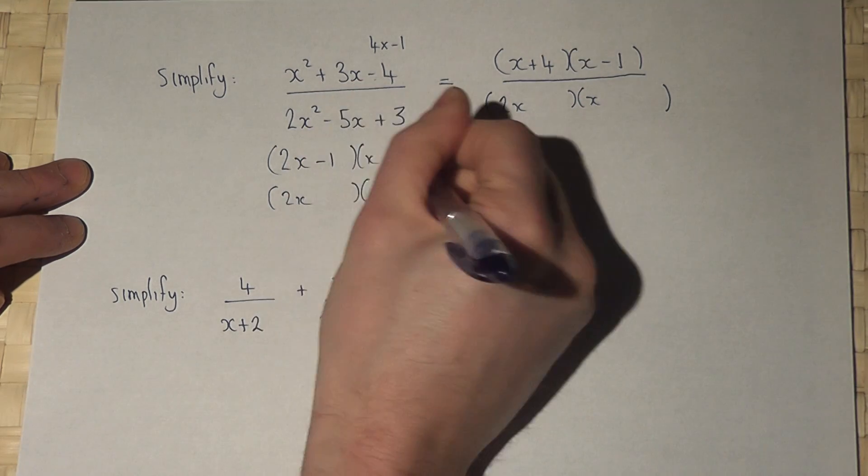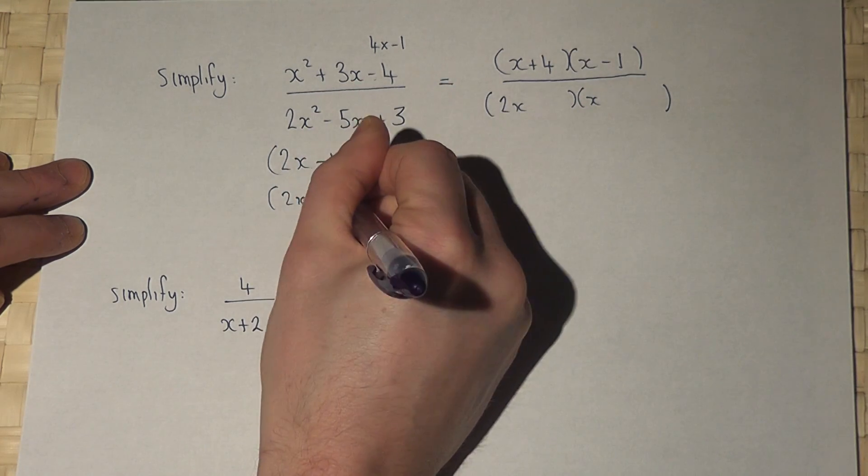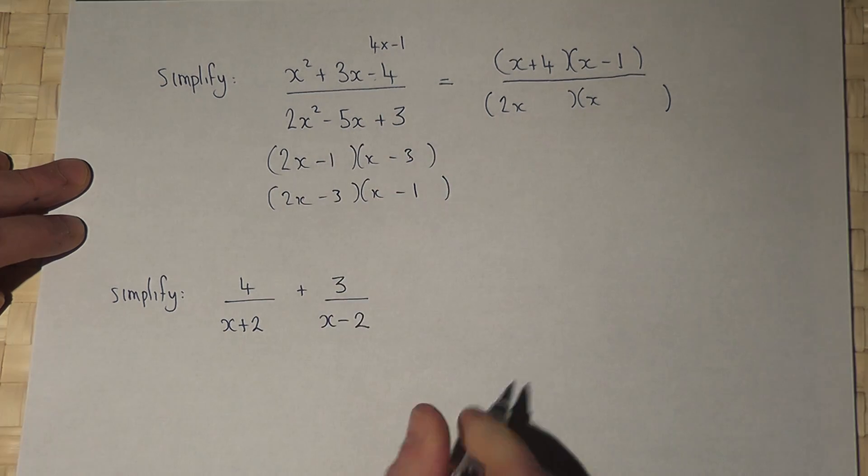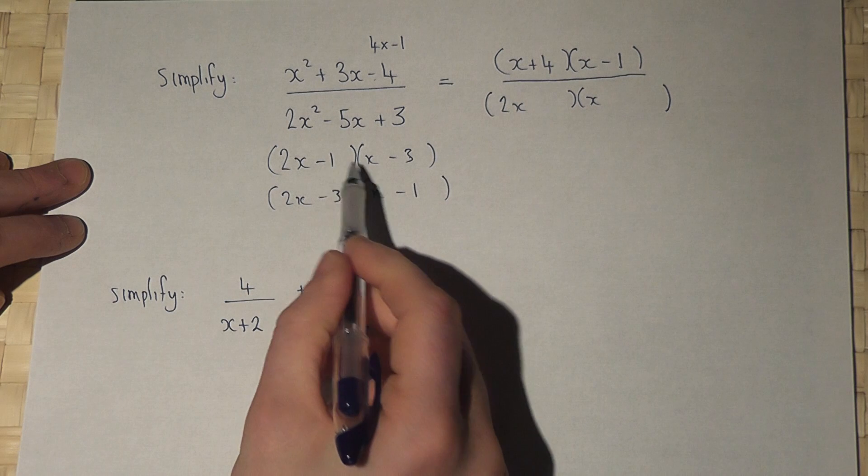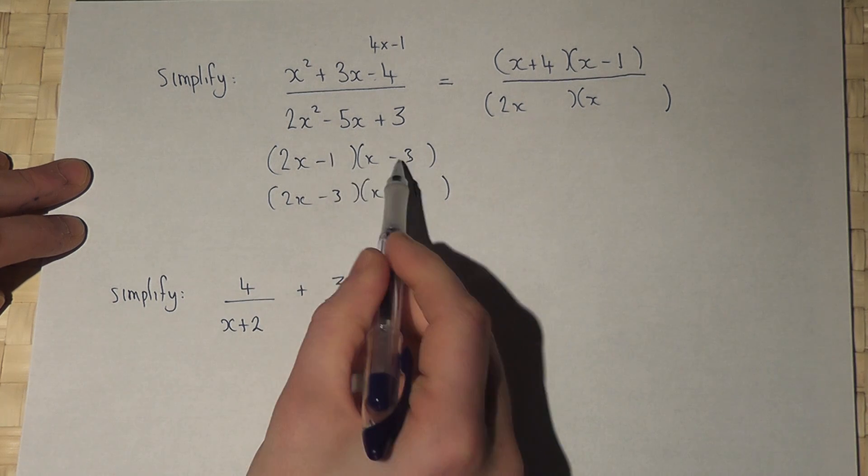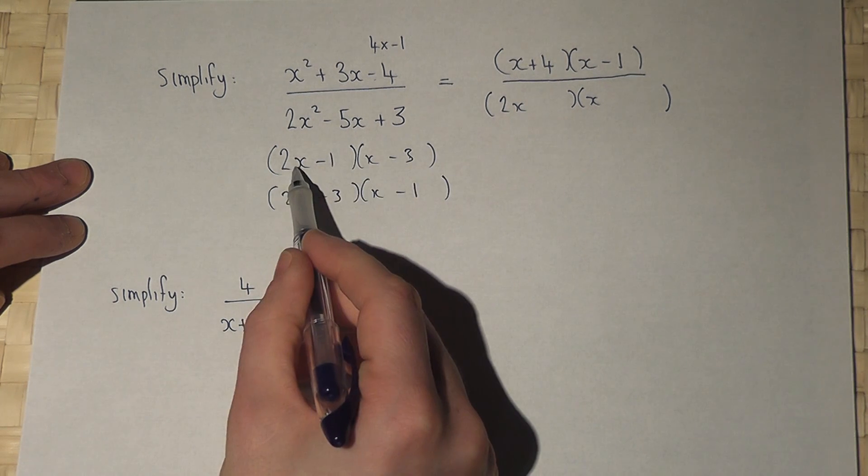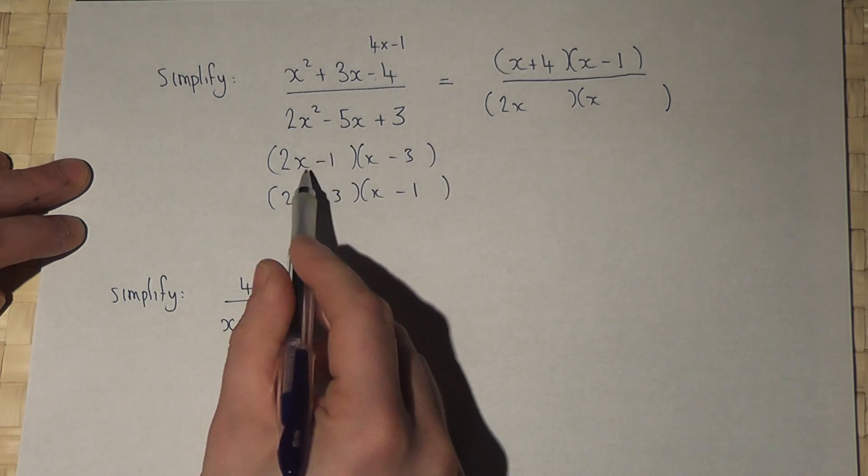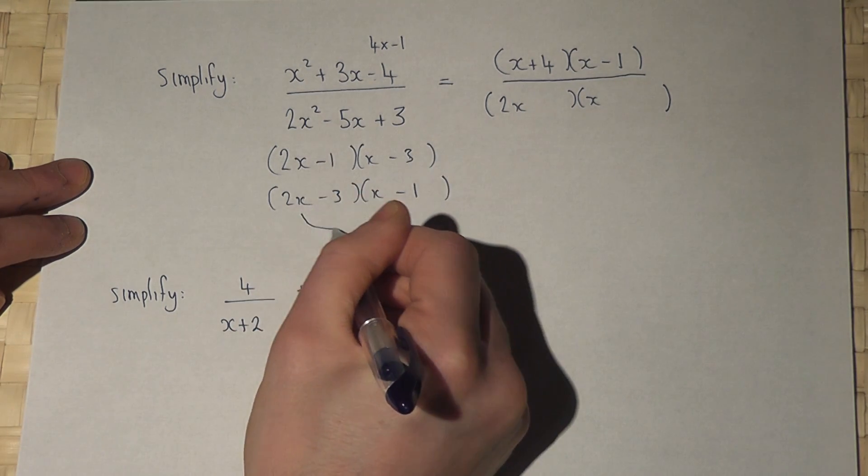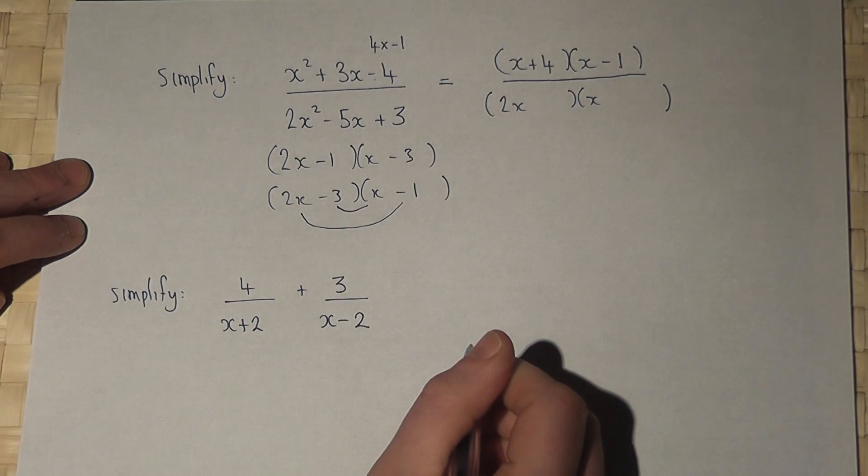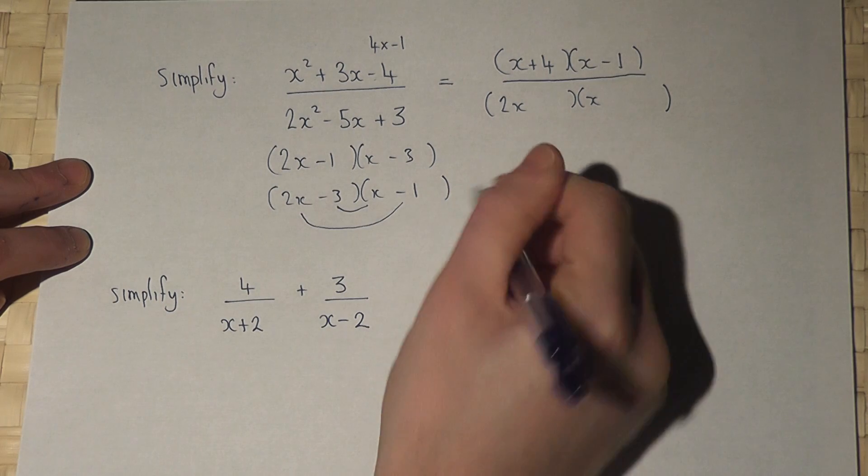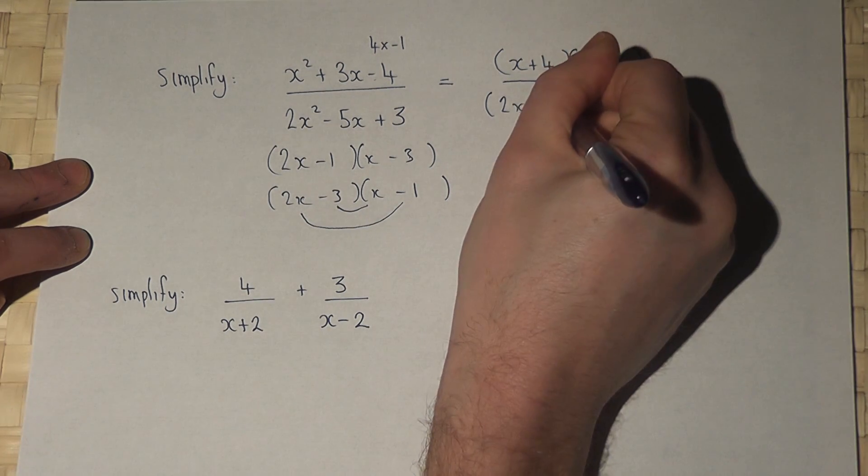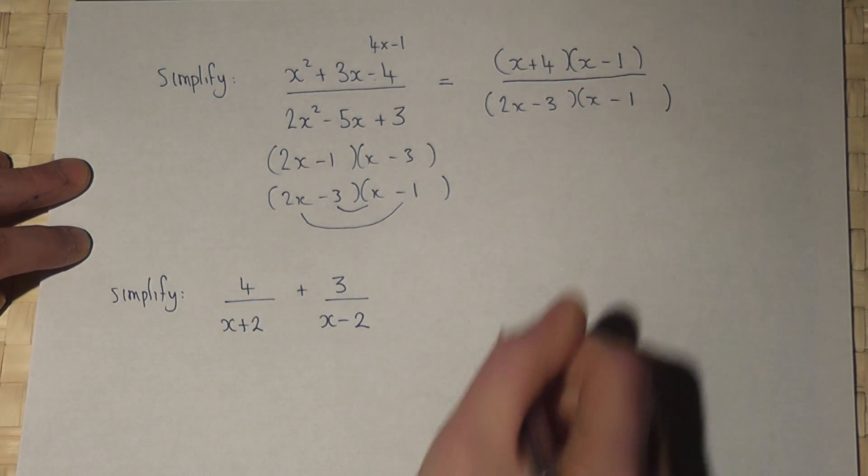I'll show you how. It's either that way or that way. Minus 1 times minus 3 is plus 3. But in the top option, minus x take away 6x gives me minus 7x. But in the second option, minus 2x take away 3x is minus 5x, which gives the required term for the x. So therefore it's 2x take away 3 and x take away 1.